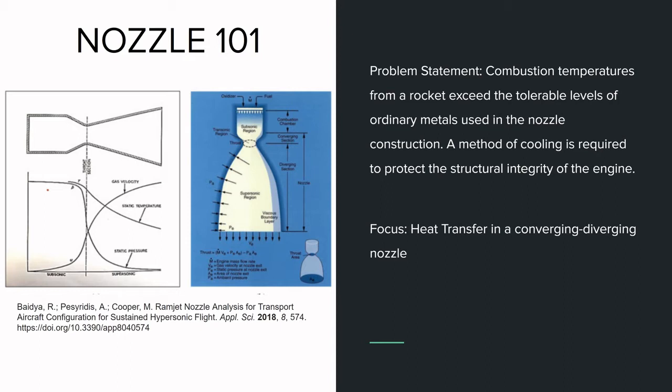We can see a static temperature, static pressure, and gas velocity plot. If we focus on the temperature plot at the nozzle inlet, nozzle throat, and nozzle exit,